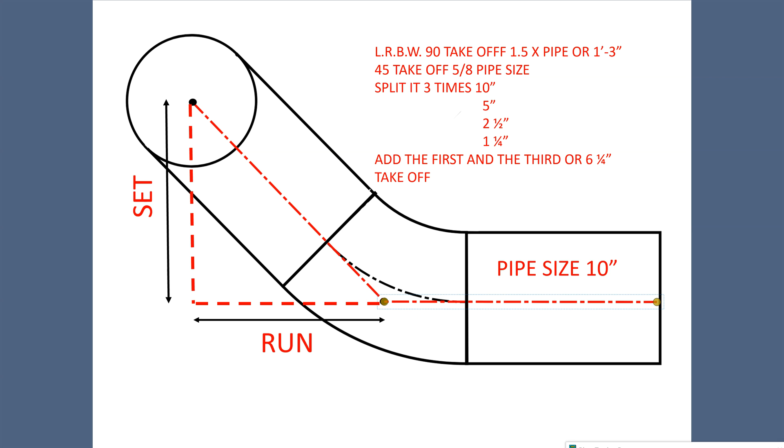Split it once, that's five. Split it again, that's two and a half. Split it again, that's one and a quarter. Add the first and the third, add them together and you get six and a quarter for the takeoff for the weld 45.